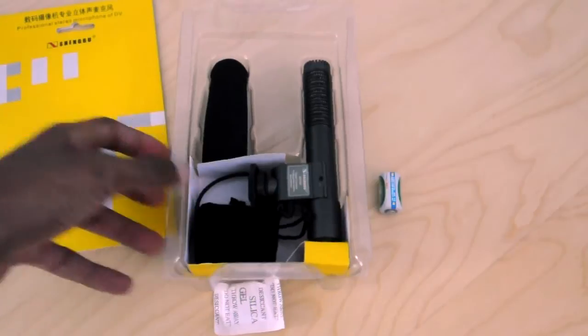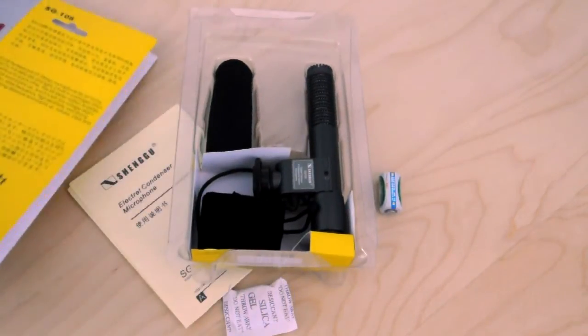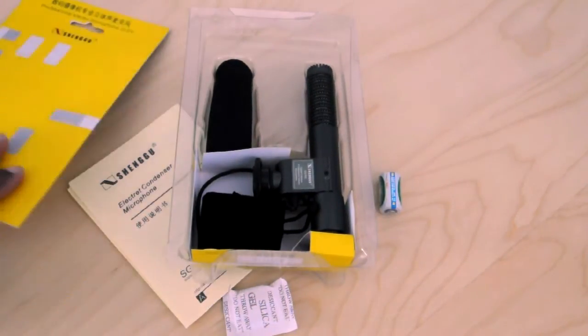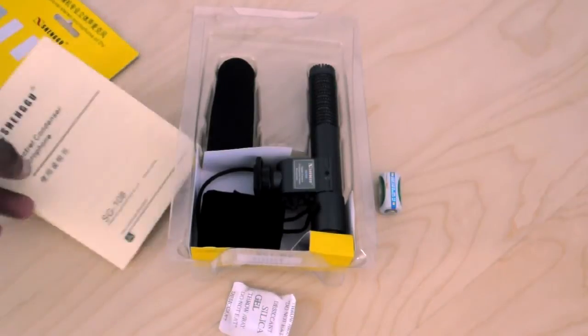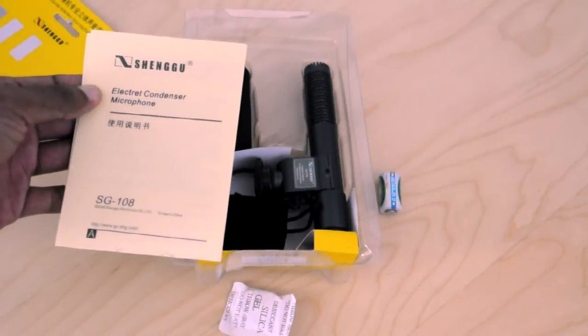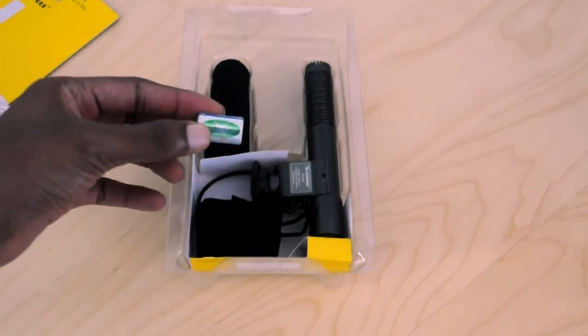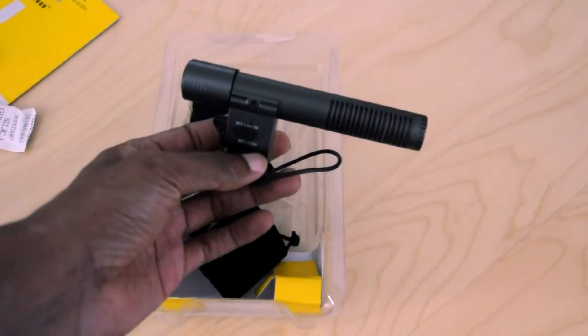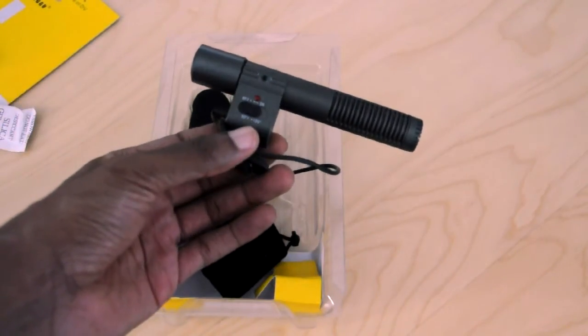Looks like you get a couple things here in addition to the mic itself. The first thing is the user's manual and followed by a battery and the microphone itself. Nothing too special.